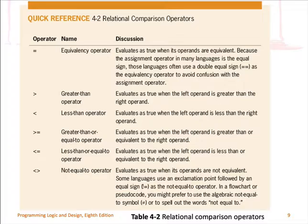Going down the list: we have greater than, less than, greater than or equal, less than or equal, and then less-than-greater-than, which is basically not equal to. So if the two values on both sides of that operator are not equal to each other, then that condition will be true. Those are the relational comparison operators for comparing values.